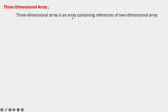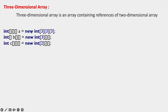Next is three-dimensional array. A three-dimensional array is an array containing references of two-dimensional arrays. As we know, a two-dimensional array has references of one-dimensional arrays, and a three-dimensional array has references of two-dimensional arrays. We declare it using int followed by three square brackets. Single-dimensional uses one bracket, two-dimensional uses two brackets, three-dimensional uses three brackets. These are all valid declaration forms.